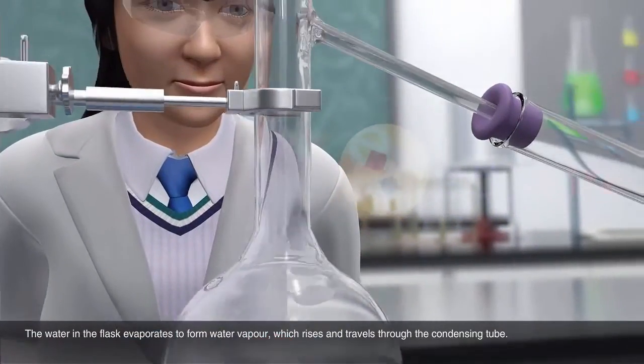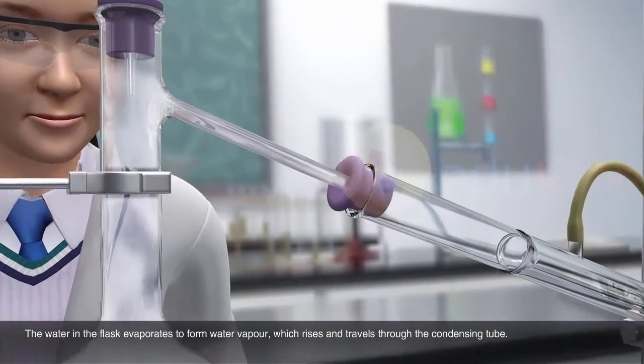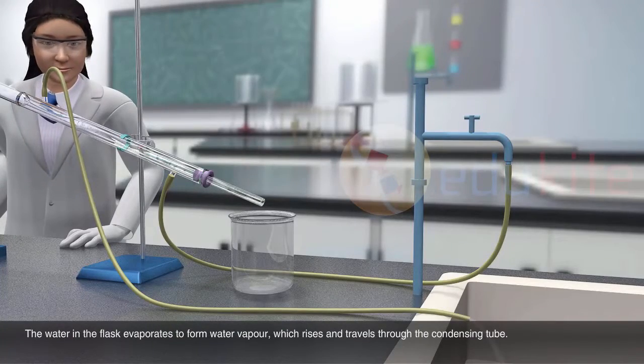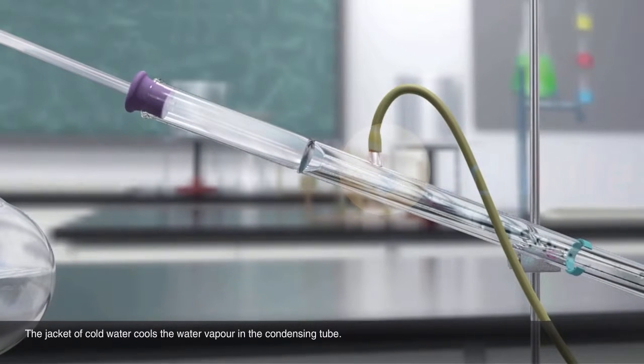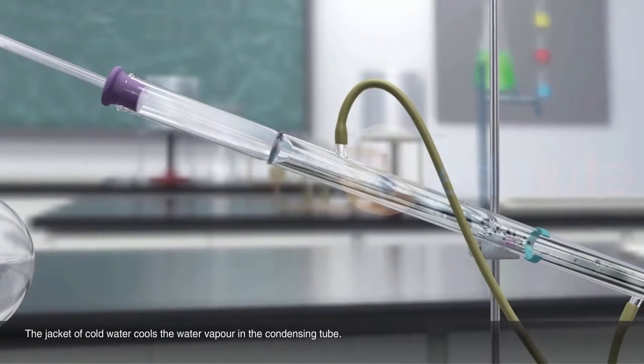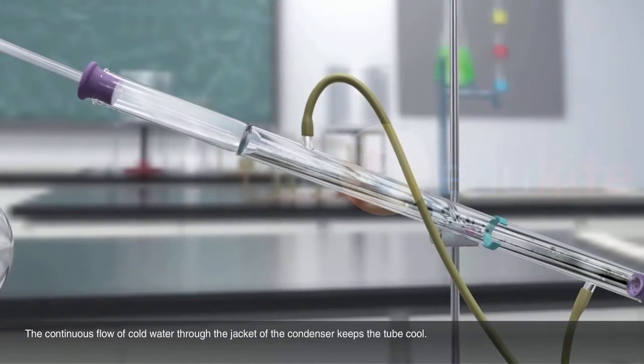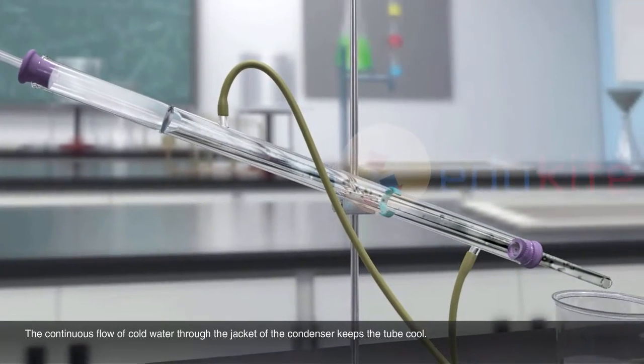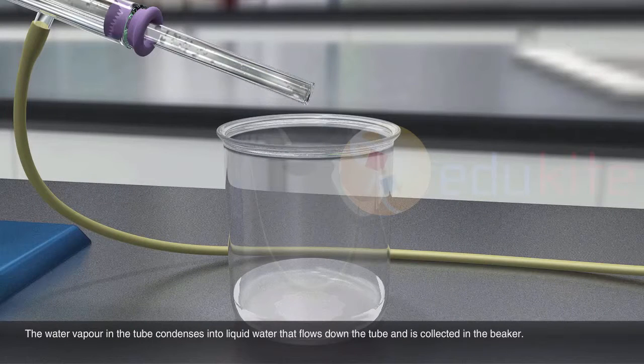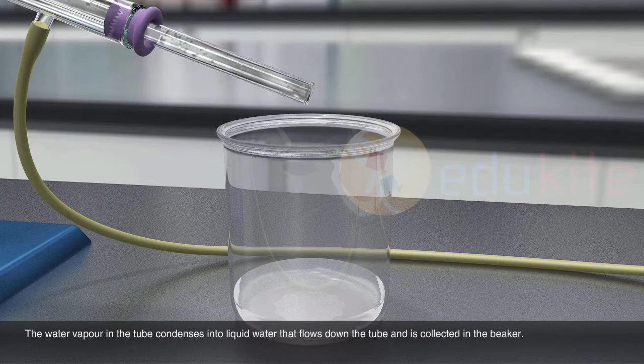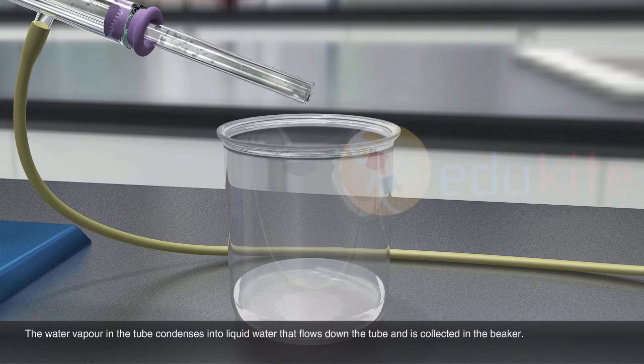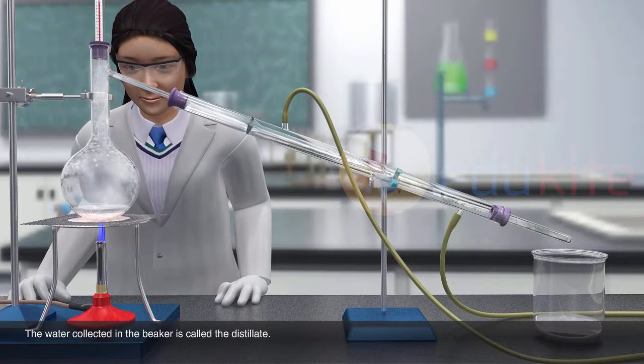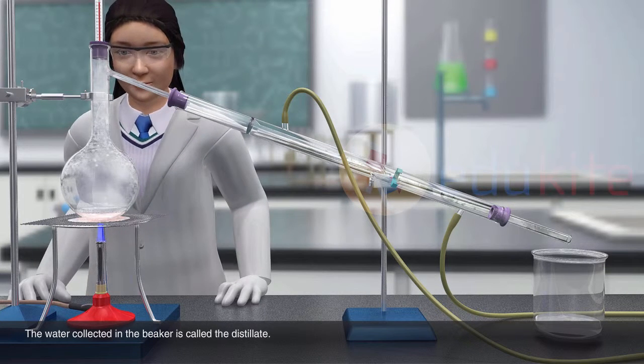The water in the flask evaporates to form water vapour which rises and travels through the condensing tube. The jacket of cold water cools the water vapour in the condensing tube. The continuous flow of cold water through the jacket of the condenser keeps the tube cool. The water vapour in the tube condenses into liquid water that flows down the tube and is collected in the beaker. The water collected in the beaker is called the distillate.